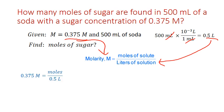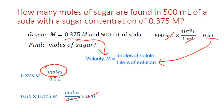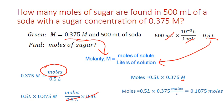To solve for moles — our unknown — we multiply both sides of the equation by 0.5 liters. This cancels it out on the right-hand side, leaving just moles. So moles equals 0.5 liters times 0.375 moles per liter. Writing out capital M as the ratio moles per liter makes it clear that the liter units cancel out, leaving moles as the final unit.